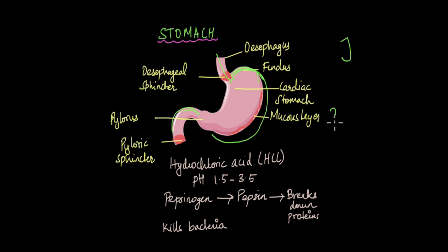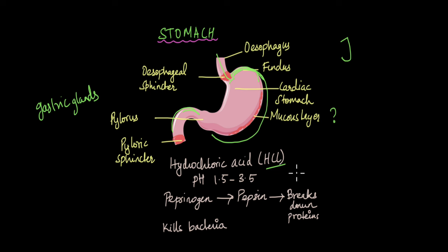Why is this mucus layer important? That's because the gastric glands in the stomach produce hydrochloric acid (HCl). Hydrochloric acid is a highly dangerous, highly acidic substance — if you've been to a biology or chemistry lab, your teachers may have cautioned you not to touch it. Just imagine how sensitive it would be to our cells inside the body. So, to protect the cells from this hydrochloric acid, the stomach has a layer of mucus. But why does our stomach even produce hydrochloric acid? Well, that has to do with the enzyme pepsinogen.